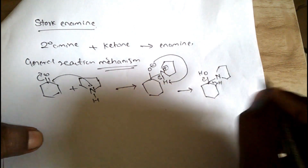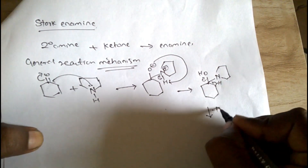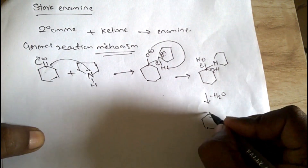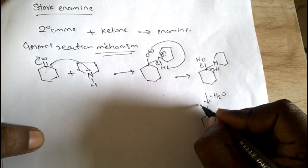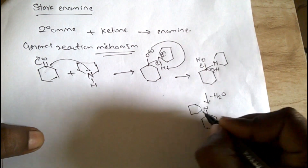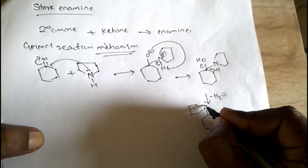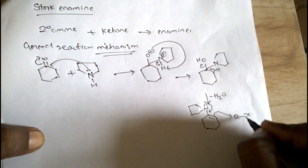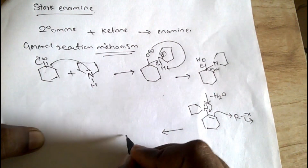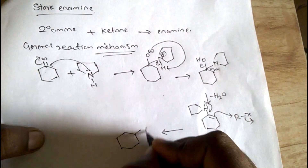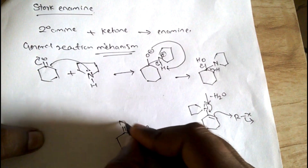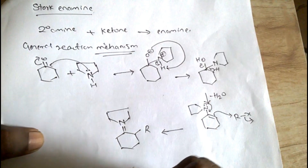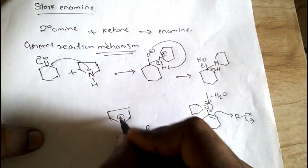This H+ will release, the bond will shift here to make a double bond, and this OH will release — water is released, forming your double bond. The nitrogen lone pair shifts downwards, attacks the R group, and that X group releases, giving us an R double bond. This becomes positively charged.